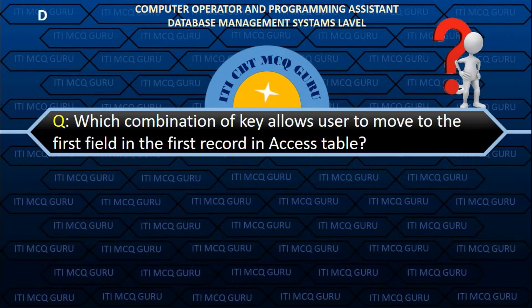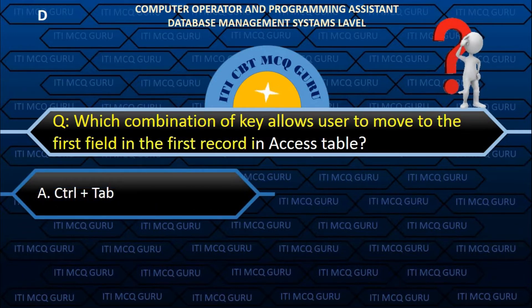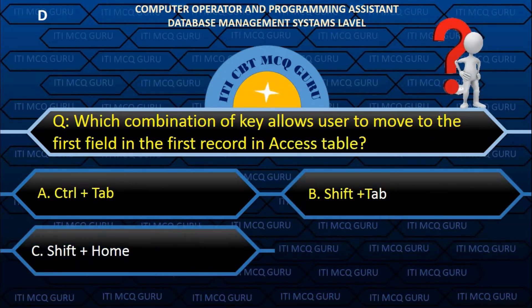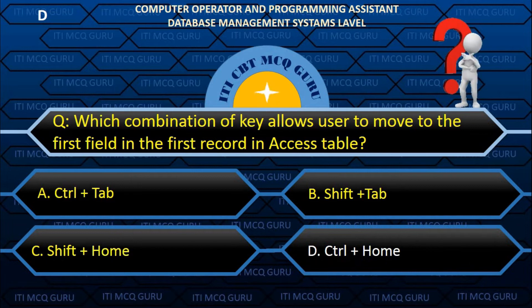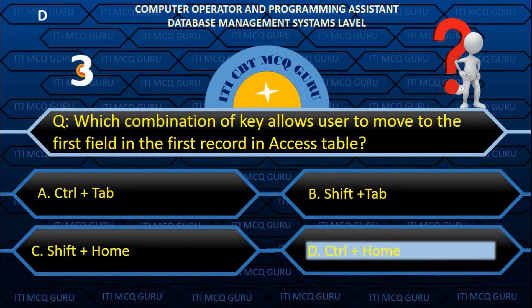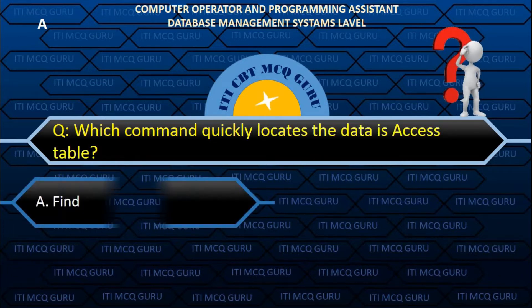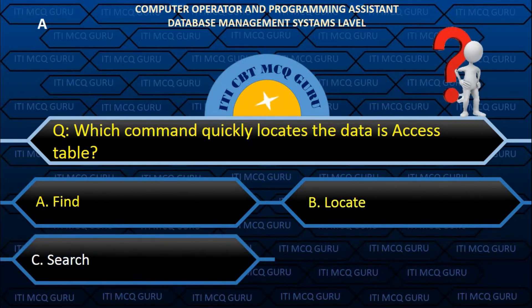Which combination of keys allows the user to move to the first field in the first record in an Access table? The data is accessible via Find.